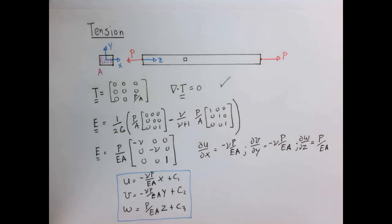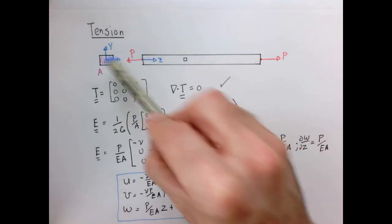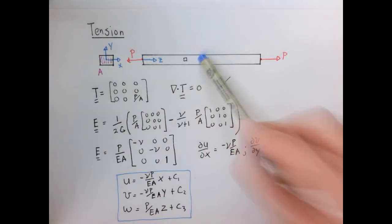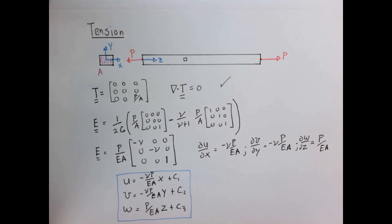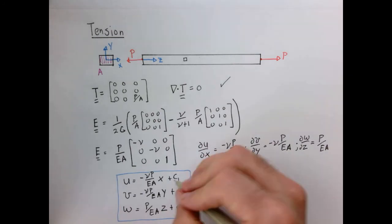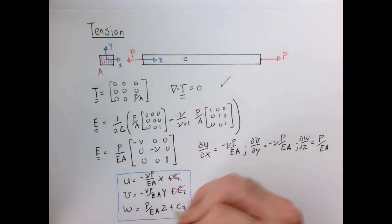Now the constant of integration, we would have to set by some condition. And in this case, probably the easiest thing to do is set the displacement to be zero at the center and maybe set our coordinate system to be at the center in the X, Y plane. So if we set a particular point to be fixed at X, Y, and Z equals zero, then our constants of integration go away and we have a simple formula like this.